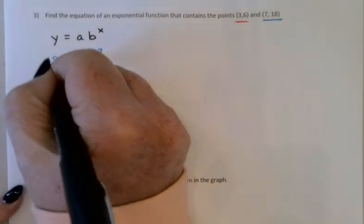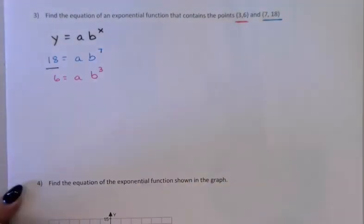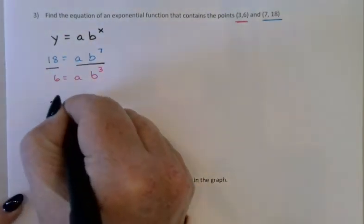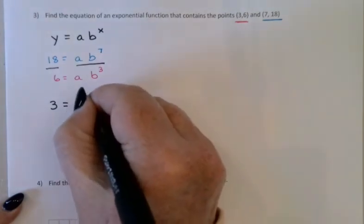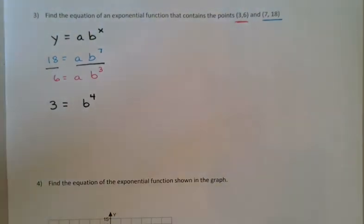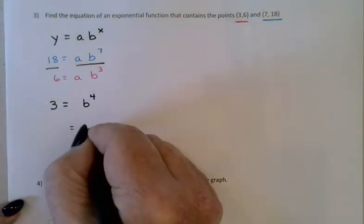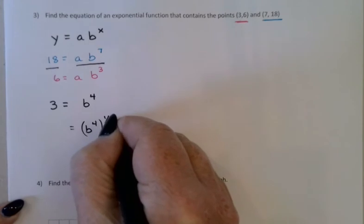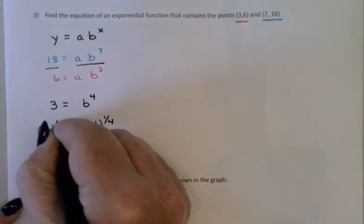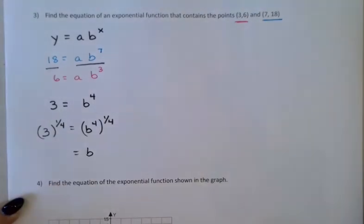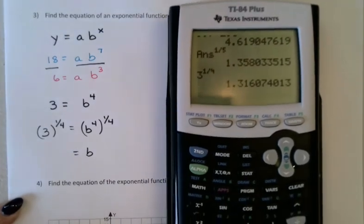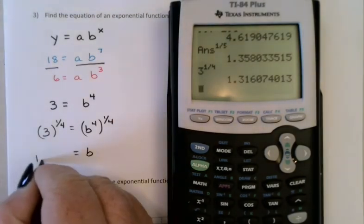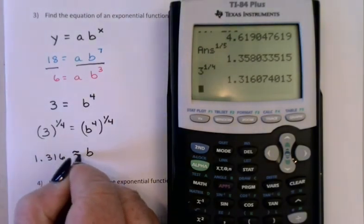The way that I'm going to do that is I'm going to divide the equations. Divide the left sides, divide the right sides. 18 divided by 6 gives me 3. a divided by a is just 1. And then subtracting the exponents, I get b to the 4th. I can now solve for b by raising both sides to the 1/4th power. And b is about 1.316.